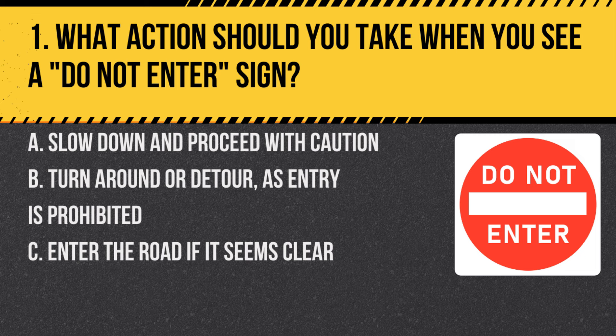Question 1. What action should you take when you see a DO NOT ENTER sign? A. Slow down and proceed with caution. B. Turn around or detour as entry is prohibited. C. Enter the road if it seems clear. Answer: B. Turn around or detour as entry is prohibited. A DO NOT ENTER sign indicates that the road is closed to traffic in your direction.